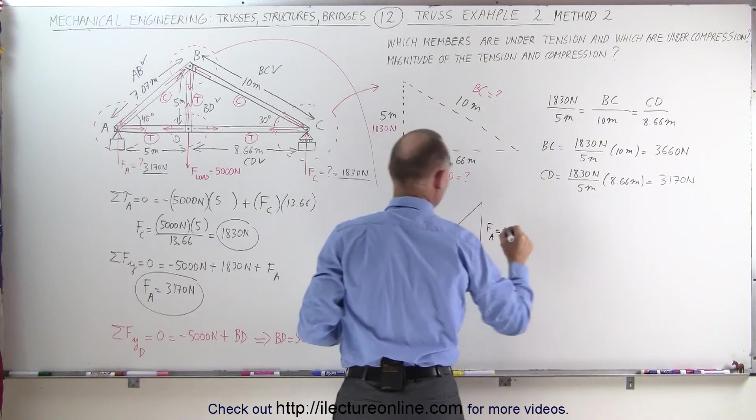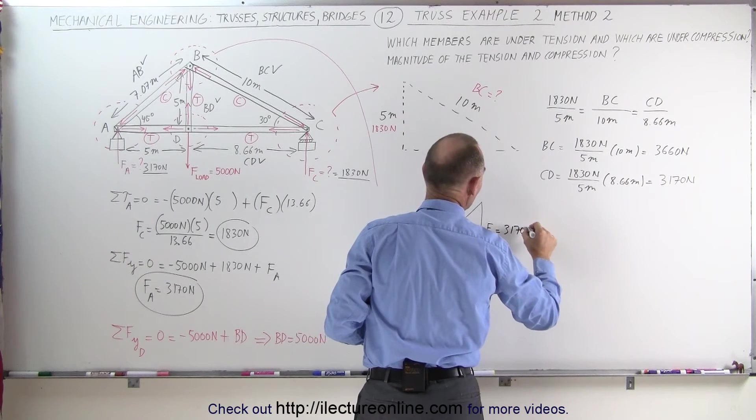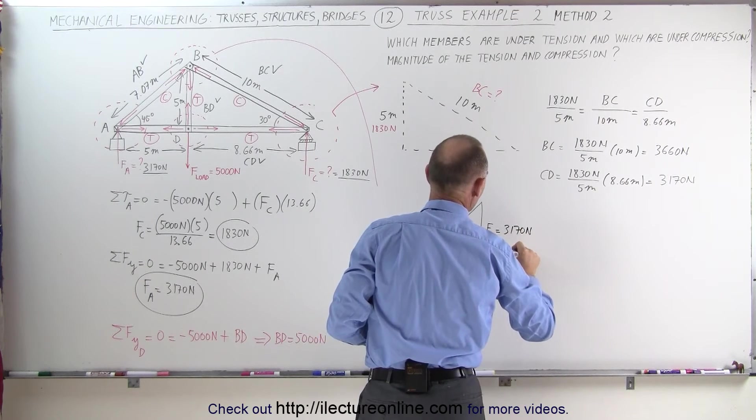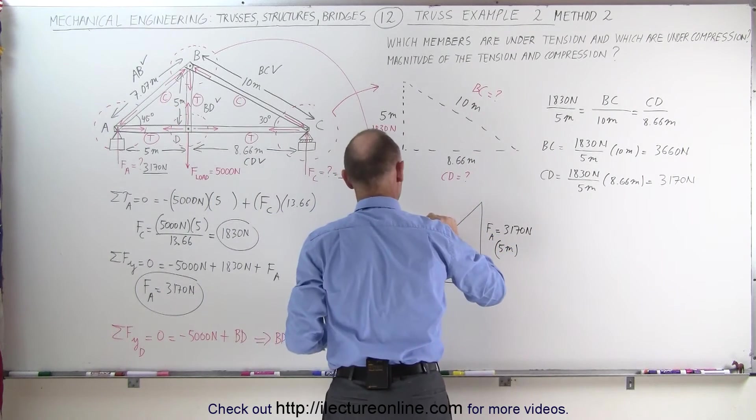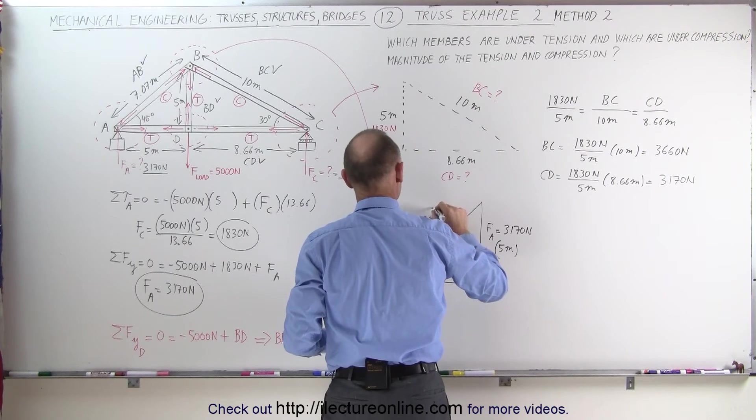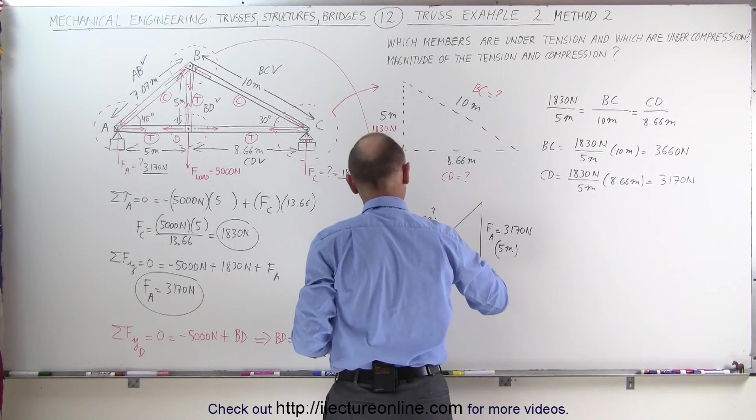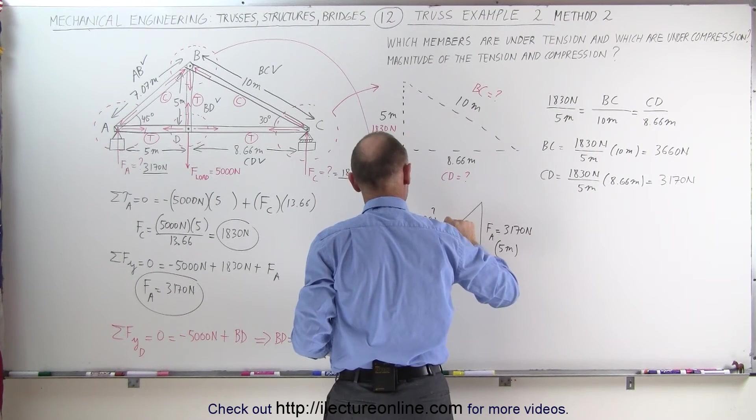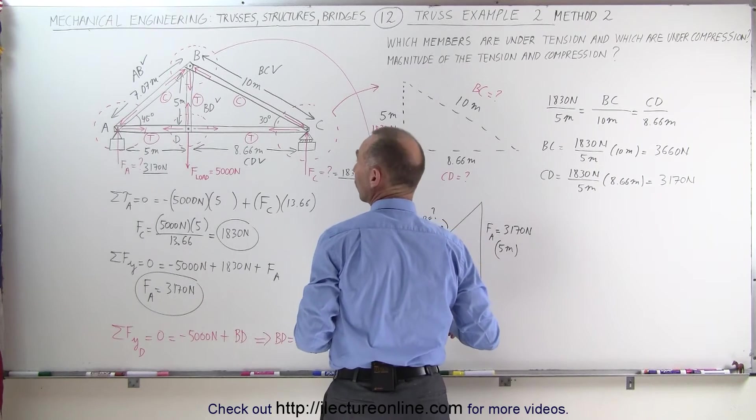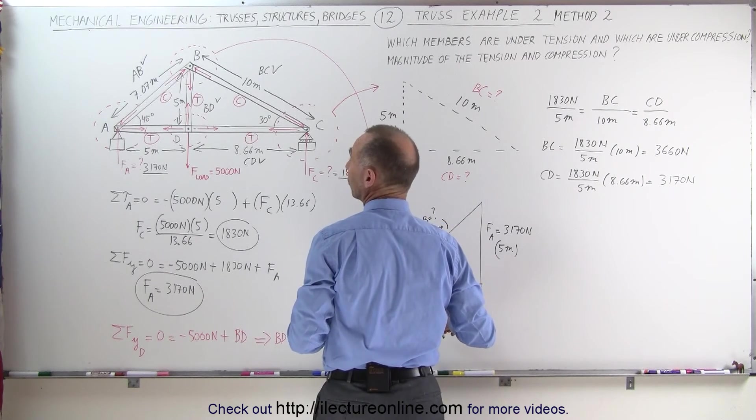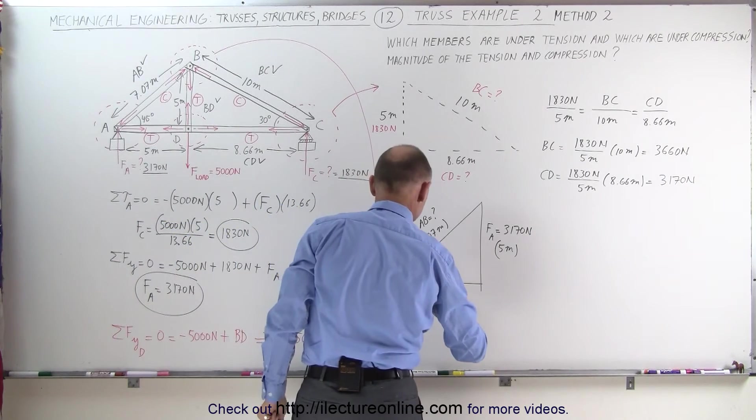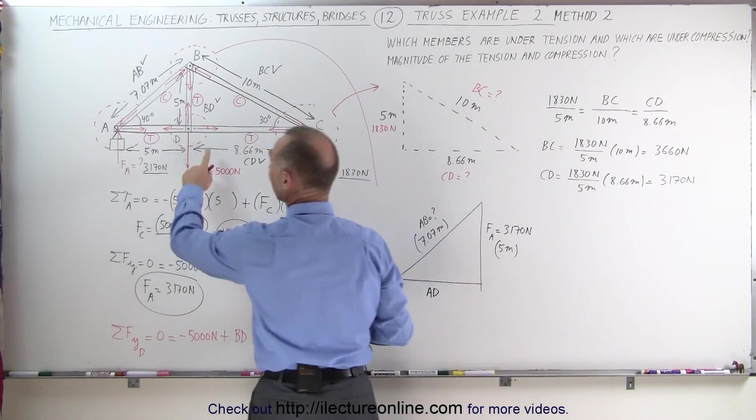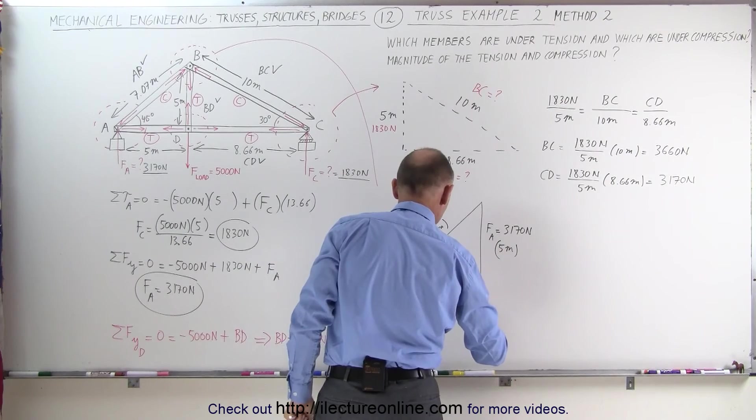F sub A is equal to 3170 newtons and the length of that member is 5 meters. We have AB, we're trying to find out the magnitude of AB, we know the length of that member is 7.07 meters. And we're trying to find the tension on AD, and the length of that member is 5 meters.